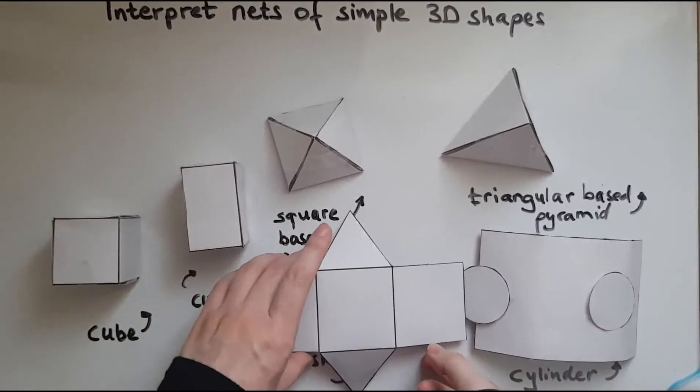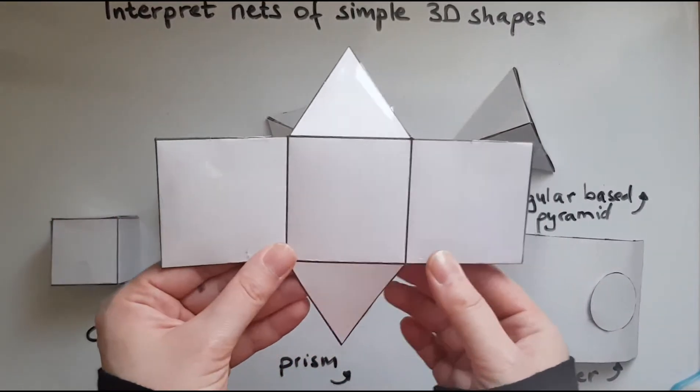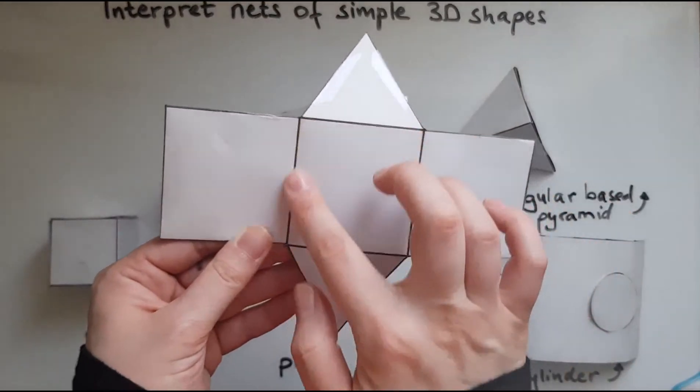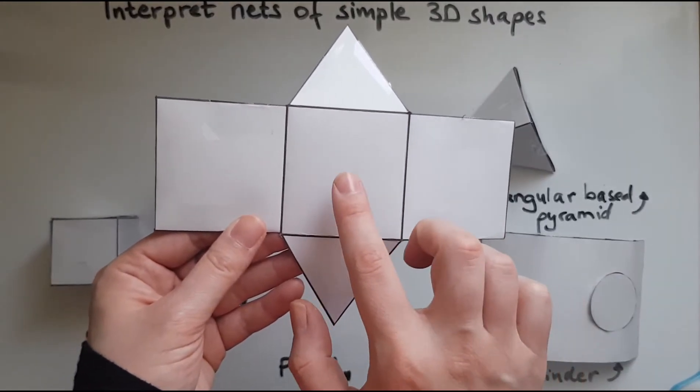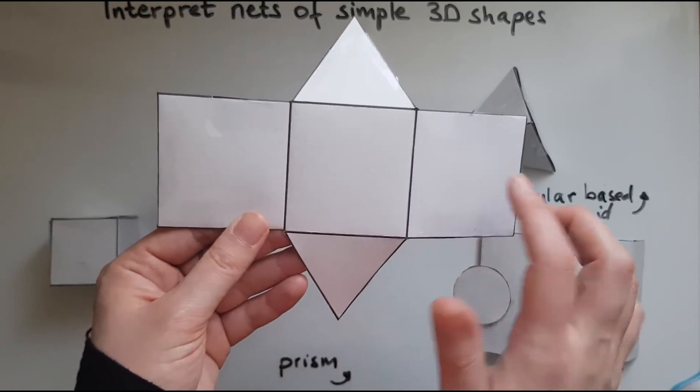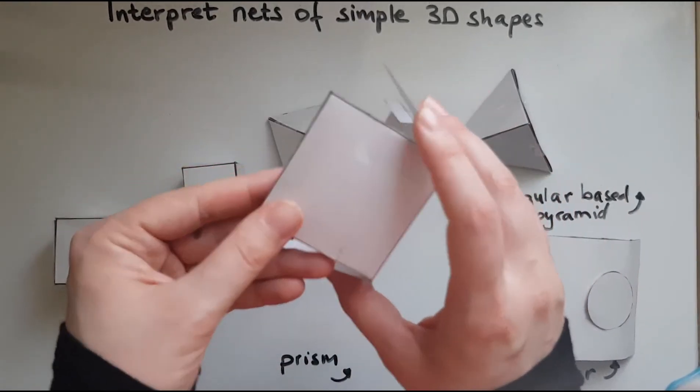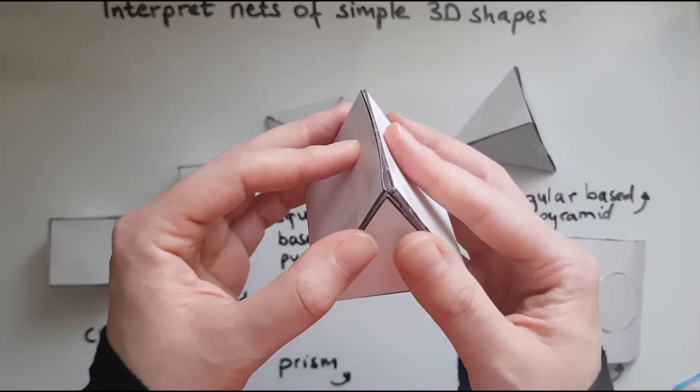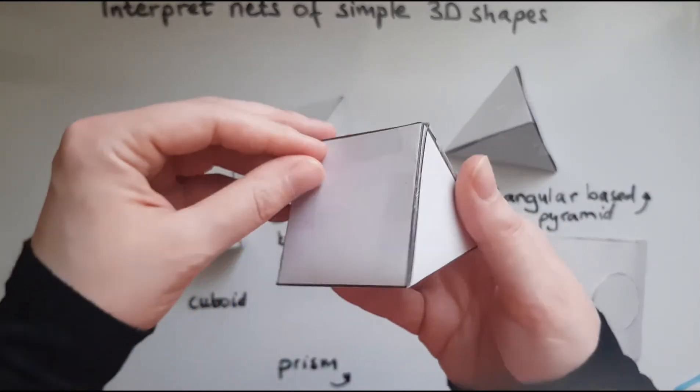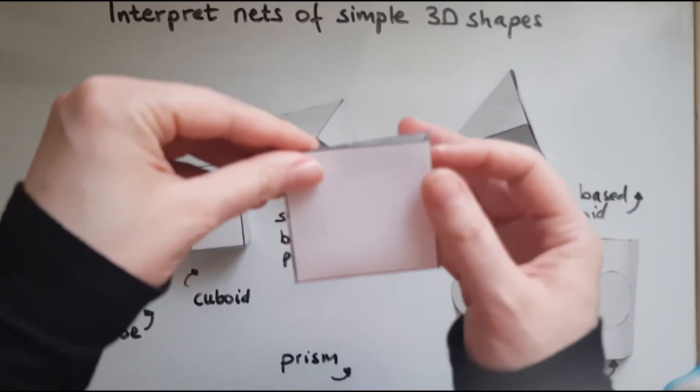And looking at the prism, as you can see, there is a square or a rectangle at the base. We have another two rectangles and two triangles on the side. So putting these together gives us the prism.